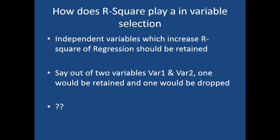When there is a question of dropping one of two variables — say variable one and variable two — which one to retain and which one to drop: add variable one to the model and see how it increases R-squared. Then drop variable one and add variable two to the model and see how R-squared changes. If R-squared increases more with variable one, it should be retained and variable two should be dropped. The one which increases R-squared more should be retained.